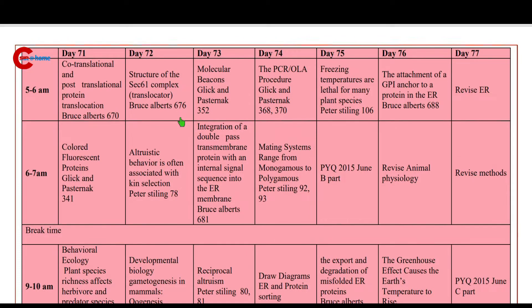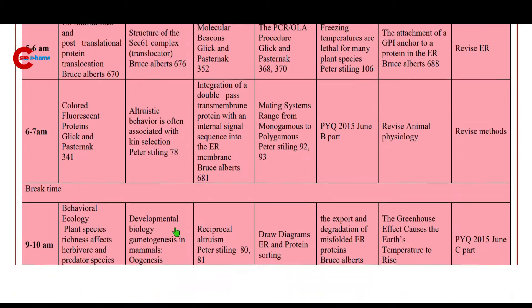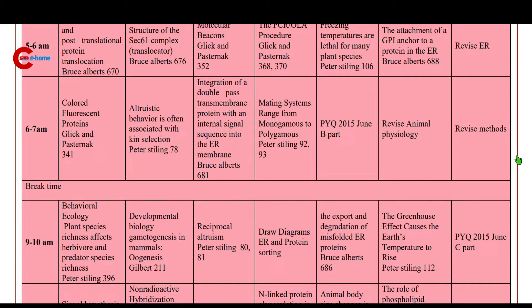Then 6 to 7 a.m.: altruistic behavior is often associated with kin selection. Then 9 to 10 a.m.: gametogenesis in mammals — oogenesis.